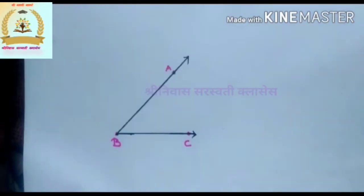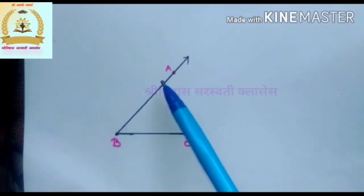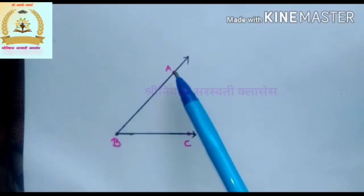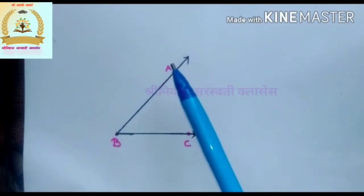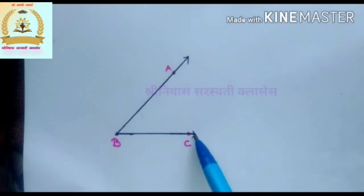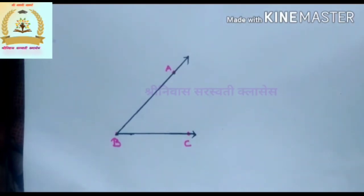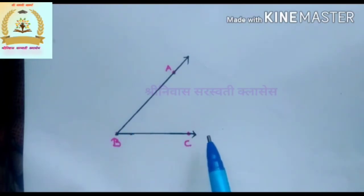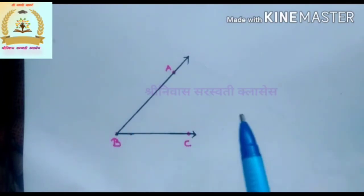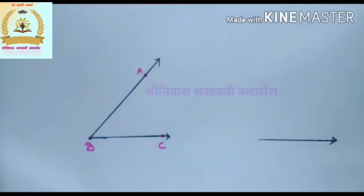Now draw a ray starting from point B and passing through point A. This is our required acute angle whose measure is 50 degrees. Angle ABC is an acute angle. The given angle is angle ABC. Draw angle PQR equal in measure to angle ABC.